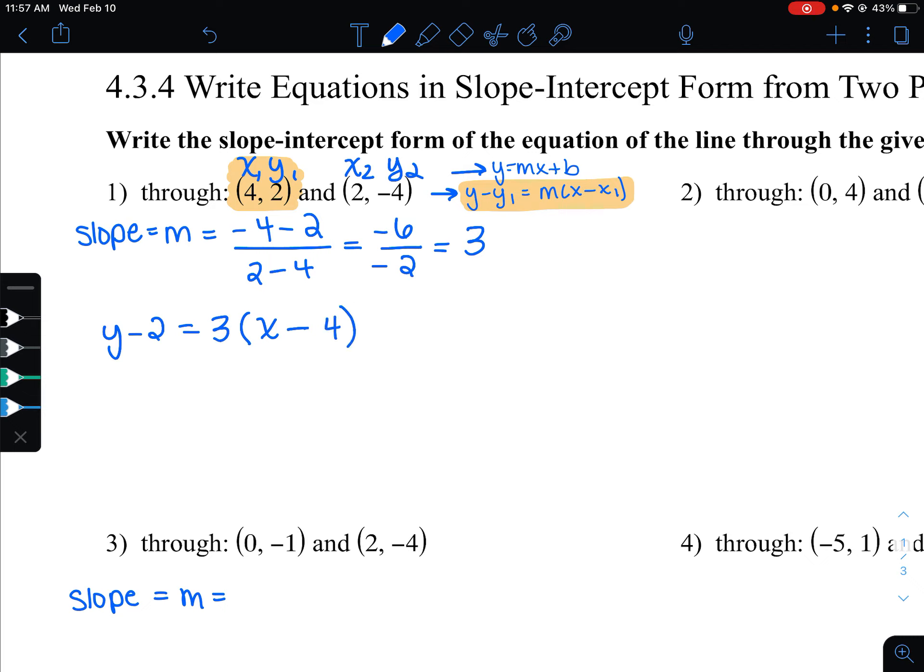Now we have it in point-slope form, but we need to go ahead and put it into slope-intercept form, which is y equals mx plus b. So we distribute here, and then we'd have no change to the left side. The right side would be 3x minus 12. And then if I want to get the y by itself, I need to move the negative 2 to the other side. So I'll add the 2 to both sides, and we should have y equals 3x minus 10. And there's your equation in slope-intercept form.